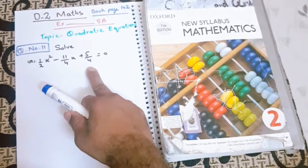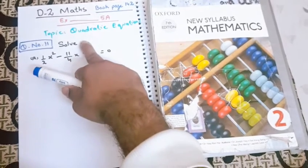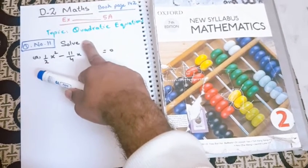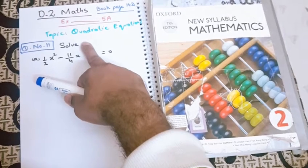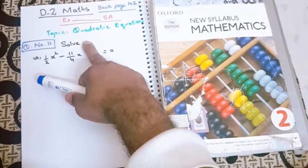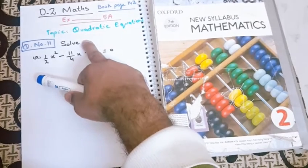Students, at this stage when you are doing question number 11, you should be sure that this question is about solving, not factorizing. Solving means you need to find the value of x.